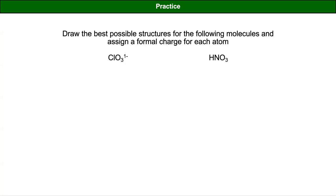Let's do another polyatomic ion. Before we do chlorate, let's do sulfate. The formula for sulfate is SO₄²⁻. How many electrons do we have to work with? Six valence electrons from sulfur, plus four oxygens each with six valence electrons, plus two extra electrons for the negative two charge. That gives us a total of 32 electrons.